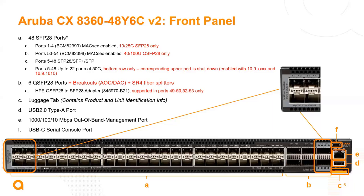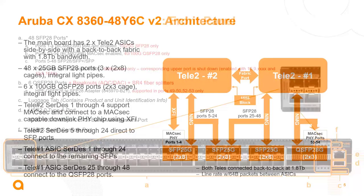I wanted to highlight the 48Y6C model — the larger model supporting 48 ports of 25 gig connectivity as well as 40 and 100 gig connectivity. This model also has MACSec-capable ports: the four ports on the far left (the 25 gig ports) are all MACSec-capable, and ports 53 and 54 on the far right (the 100 gig ports) are also MACSec-capable. This switch also supports 50 gig, but only in the bottom row, and those 50 gig optics do not work on the MACSec ports — supporting a total of 22 ports at 50 gig.